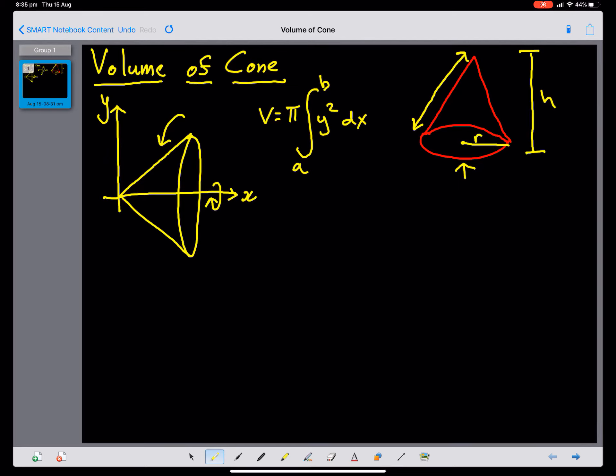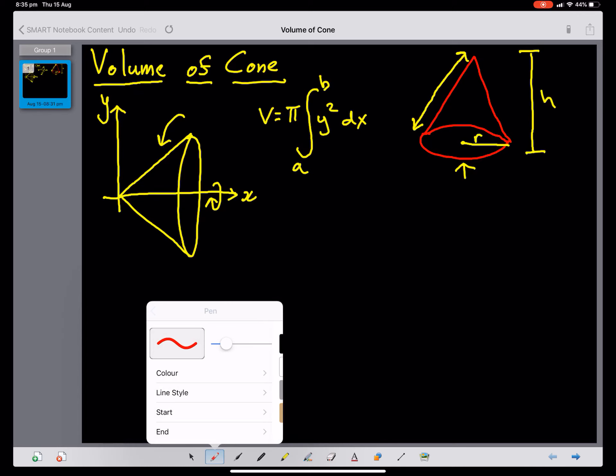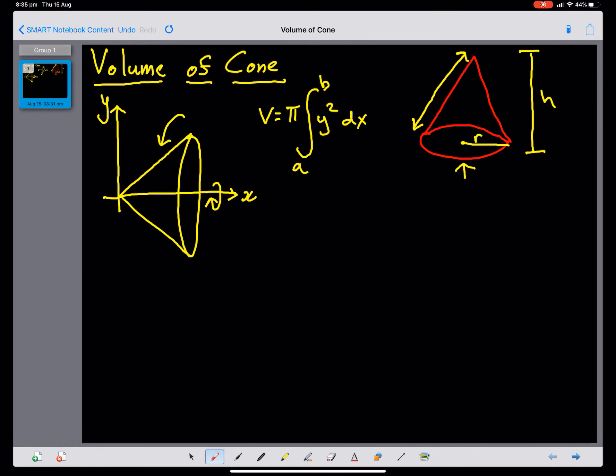Our sphere has a radius of R, and this is going to be our y-value, which makes sense. The radius of R, and it's going to have a height of h. That makes sense there. Height of h.